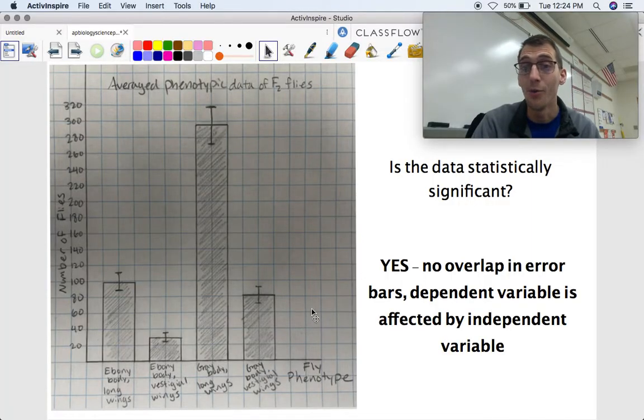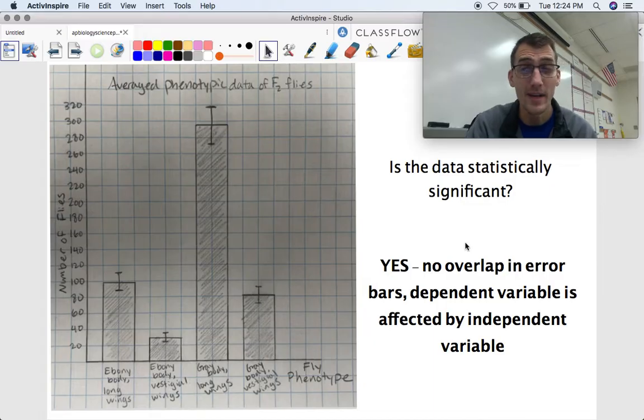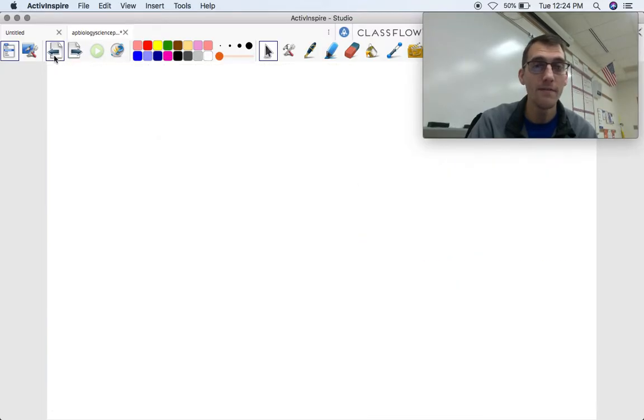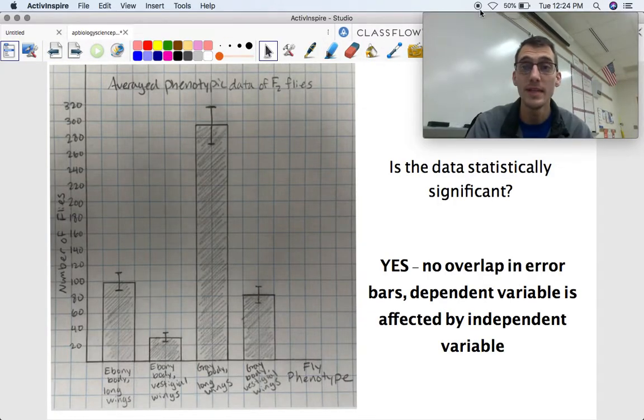So check it out. Here's this gigantic range for uric acid. The other ranges of these other error bars fall into that. You don't have statistically significant data. The independent variable does not affect the dependent variable. So that means the matrix does not affect calcium sensitivity there. So check it out. On our graph here, is the data statistically significant? Do our error bars overlap? Well, yes, it is statistically significant. There's no overlap in the error bars. Maybe a little bit between ebony body long wings and gray body vestigial wings, but the rest of these do not overlap at all. And we can indicate that yes, the dependent variable is affected by the independent variable. There is a significant difference in the number of flies of each phenotype. So there's something going on genetically. If you want to know what this is all about, I believe this is topic 5.6 in my other videos. But that will be it for today. Please let me know if you have any questions and we'll see you next time.